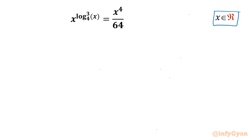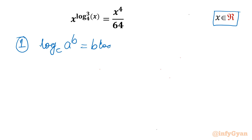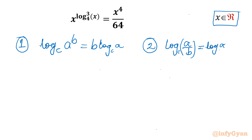Let's get started by writing two powerful properties of log. Property number one: log a power b with base c can be written as b times log a with base c. The second property is the division part: log (a over b) with base c equals log a base c minus log b base c.